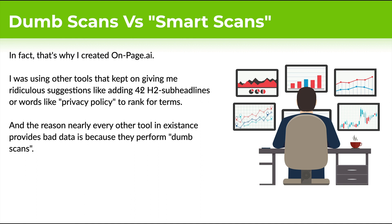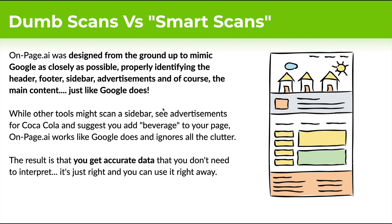I encountered scans where they were suggesting 42 H2 sub-headlines to add and words like 'privacy policy' — and I thought, this makes absolutely no sense. The reason they suggest those things is because they're doing what I call dumb scans — essentially just scanning the whole page without taking any context. OnPage.ai was designed from the ground up to mimic Google as closely as possible, properly identifying the header, footer, sidebar, advertisements, and of course the main content, just like Google does.